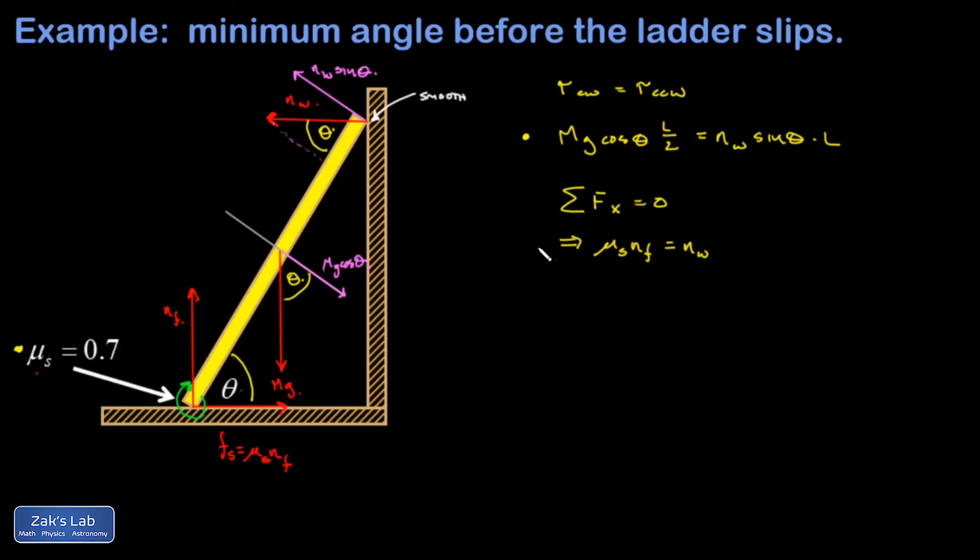There is one force pointing to the left. Thankfully, if there wasn't, this thing couldn't be in equilibrium, and so there's my second useful equation. Finally if I analyze the forces in the y direction, I get the mg pulling down has to be exactly equal to the normal force exerted by the floor pushing up. Those are the only vertical forces in the problem, so there's my third useful equation.